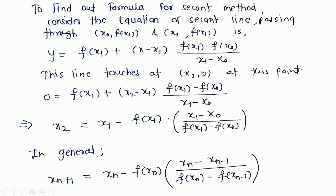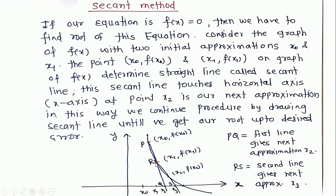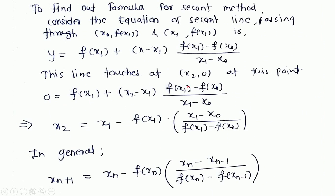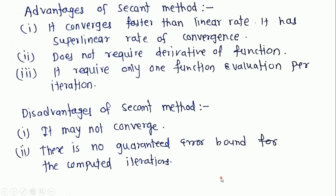As the line touches the point x2 comma 0 — this is the point where line PQ touches the x-axis — we put y equal to 0 and x equal to x2. Rearranging the terms we get x2 equals x1 minus f of x1 times x1 minus x0, divided by f of x1 minus f of x0. In general, xn plus 1 equals xn minus f of xn times xn minus xn minus 1, divided by f of xn minus f of xn minus 1. This is the general formula for the secant method.